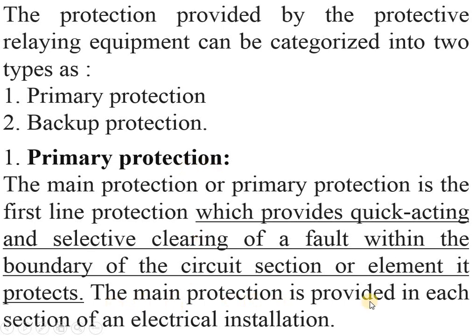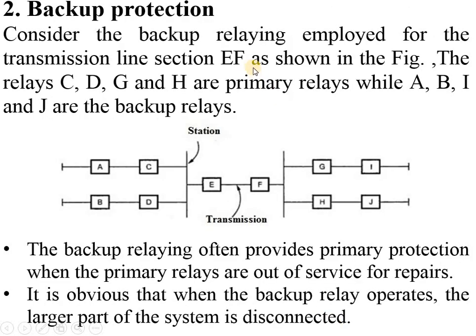The main protection is provided in each section of an electrical installation, as we have seen in the earlier video. For backup protection, consider the backup relaying employed for transmission line protection EF, as shown in the figure. The relays C, D, G and H are primary relays, while A, B, I and J are the backup relays.